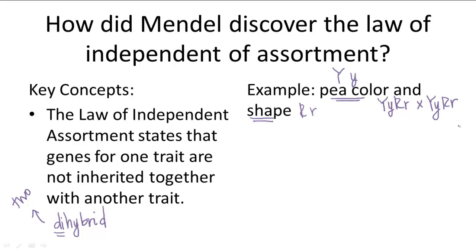So we've done monohybrid crosses, which we solved with Punnett squares. How do we solve dihybrid crosses with Punnett squares?